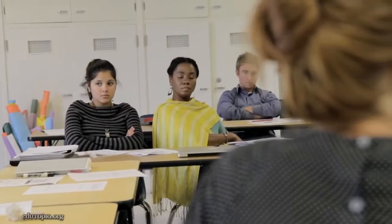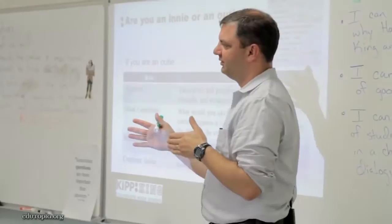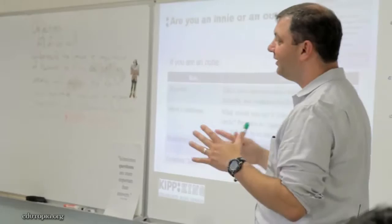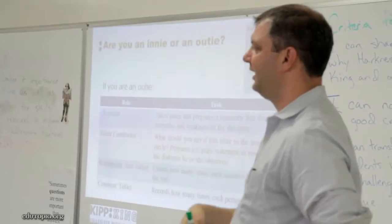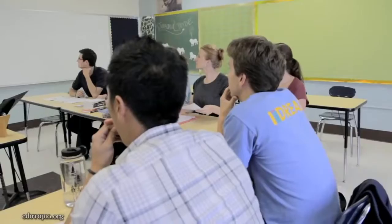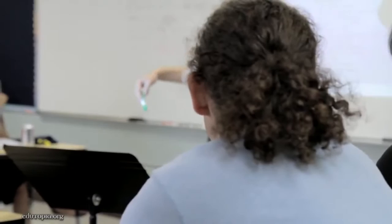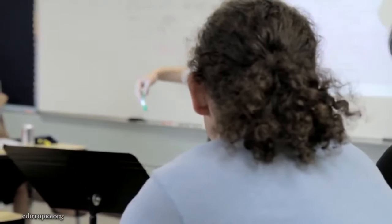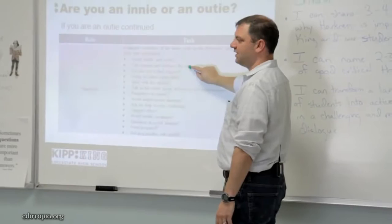Here are roles you might assign to people on the outside: you might designate a reporter — it's actually interesting to have multiple reporters because they sometimes see things differently. There's also the silent contributor, where they follow along as if they were in the conversation, and at the end you ask what would you have said. And the shadow role — you're directly assigned to a student in the inner circle to observe: did she speak loudly and clearly, did she give reasons and evidence, did she use the text, did she paraphrase accurately.